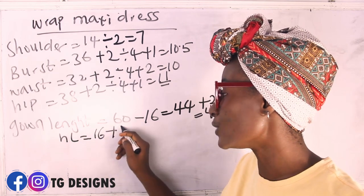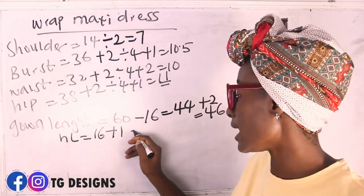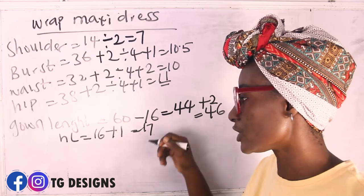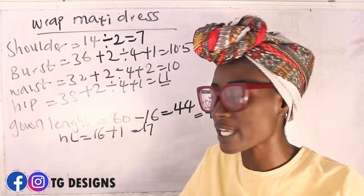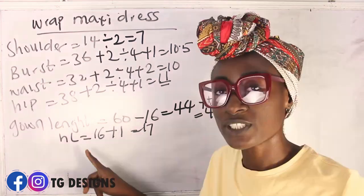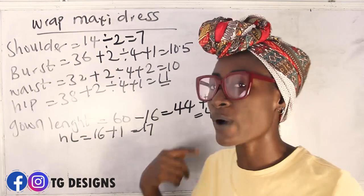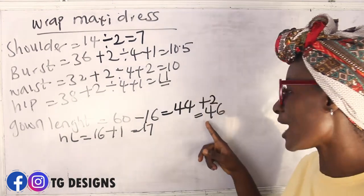Now we add 2 inches seam allowance to our skirt section, giving us 46 inches for the lower part length. For the upper half length of 16 inches, we add 1 inch sewing allowance, making it 17 inches. So from shoulder to waist we have 17 inches, and from waist to garment hem we have 46 inches.